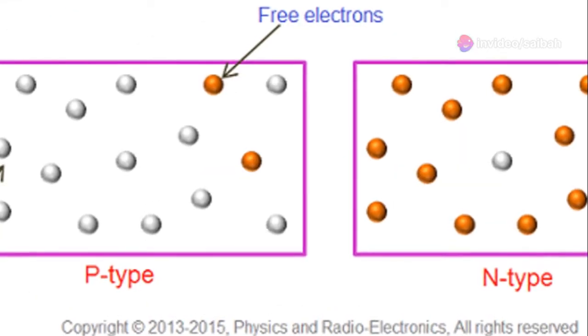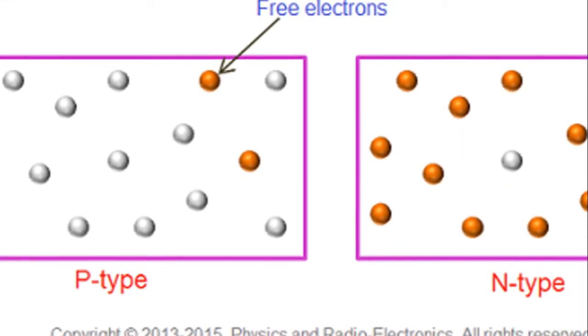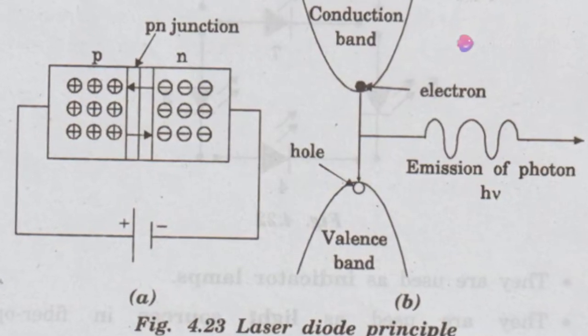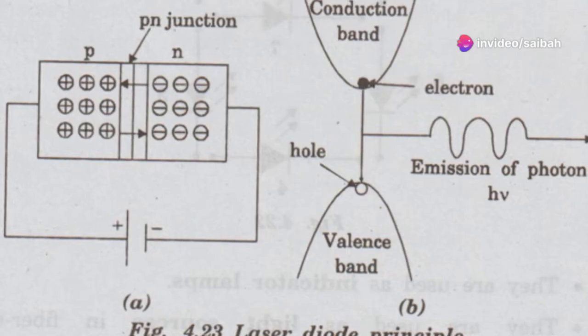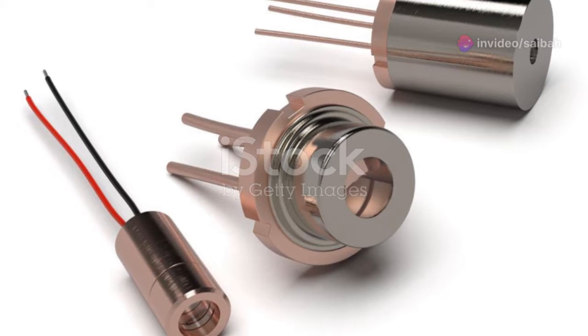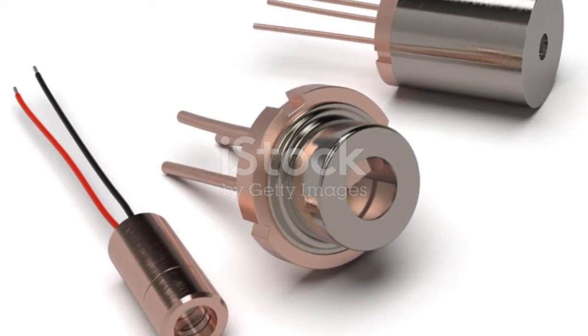In absorption, the laser diode has a P-N junction filled with electrons and holes. When voltage is applied, electrons absorb energy and jump to a higher energy level, leaving behind holes. This excited state is short-lived, lasting about a nanosecond.